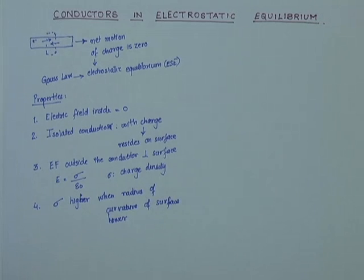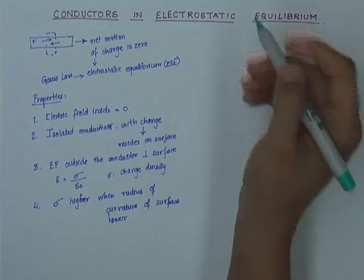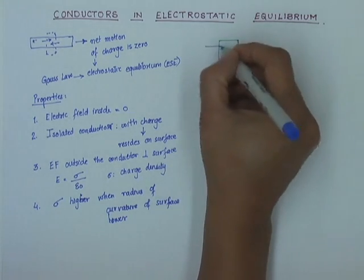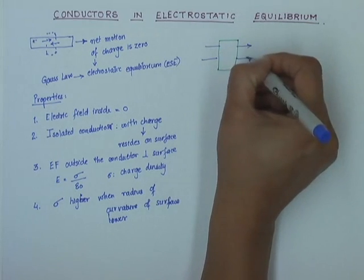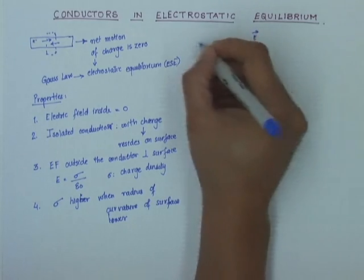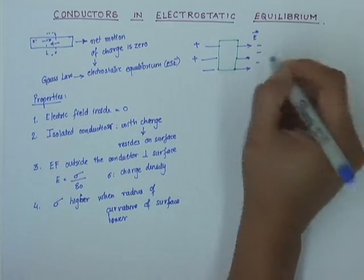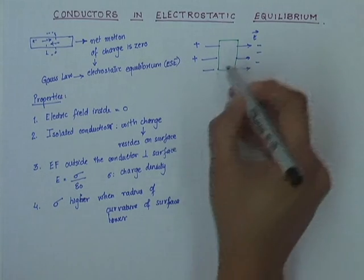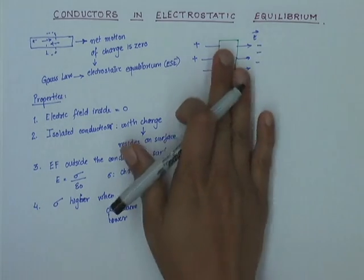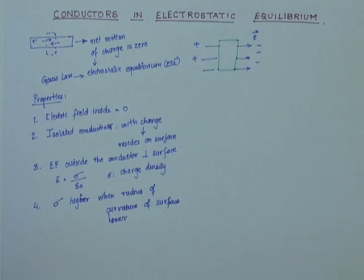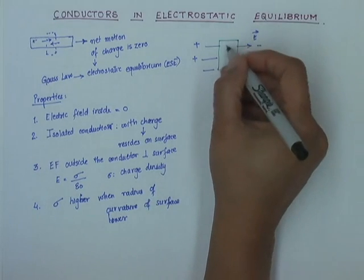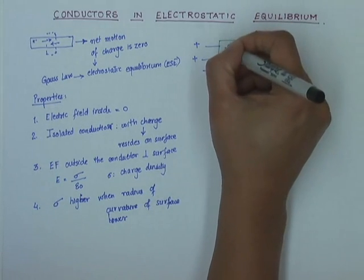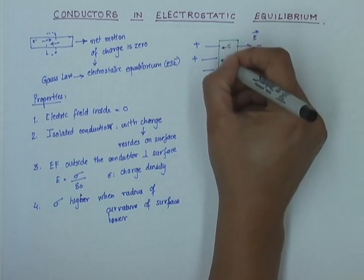Let us start with deriving property number 1. Assume I have a conductor placed in a uniform electric field. The moment I draw an electric field like this, it means positive charge is on one side and negative charge is on the other, since electric field lines start from positive and go towards negative charge. When I place a conductor in this electric field, it is not yet in electrostatic equilibrium — it has an electron fluid — so electrons start getting attracted towards the positive end and move in that direction.